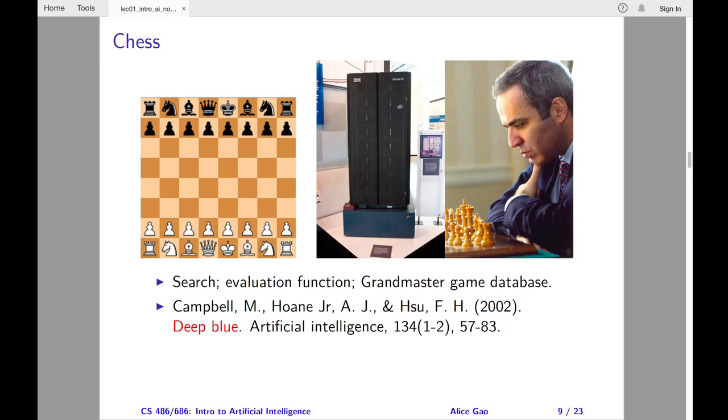Deep Blue used several strategies. It performed look-ahead search. It made use of a complex evaluation function to evaluate the likely game outcome of a board position. The evaluation function was handcrafted with 8,000 features. Deep Blue also had a large grandmaster game database, and it was encouraged to play moves that appeared in the database.